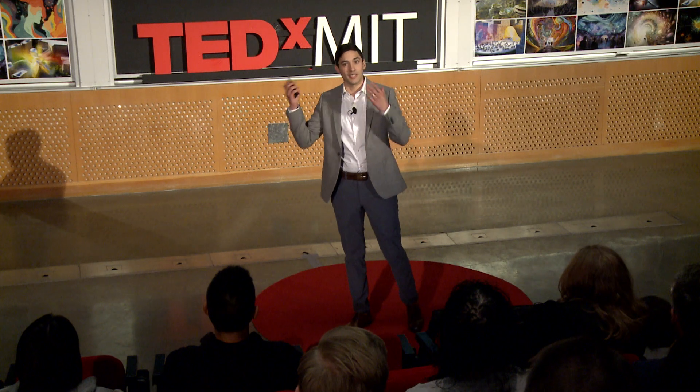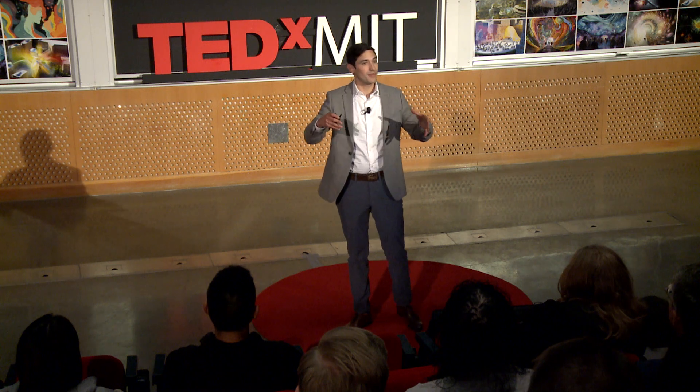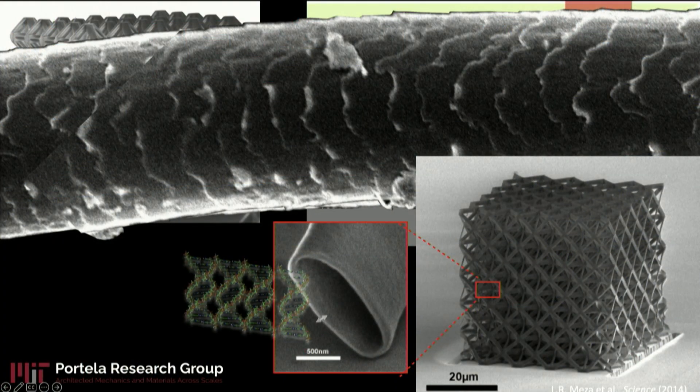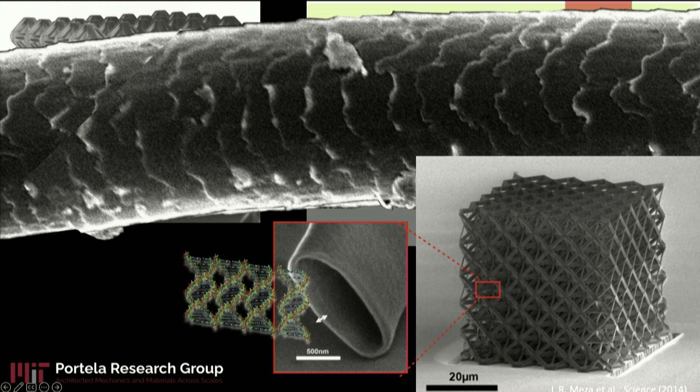But I also said we make them out of ceramics. So this is how we would go about it. We take these polymeric structures. Now we coat them with very thin layers of a ceramic. And so thin, for example, that we can be talking about tens of nanometers, which is just about a handful of DNA helices thick.